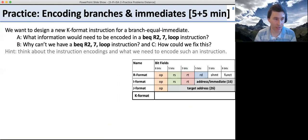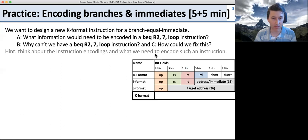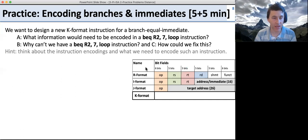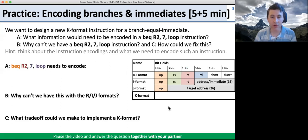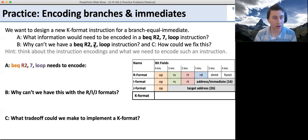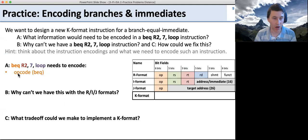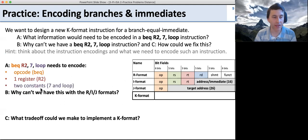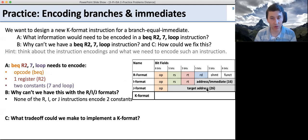Here's a practice on encoding branches and immediates. We want to design a new K-format instruction to do branch-equals-immediate, which allows comparing a register value to an immediate. What information needs to be encoded? It needs the op code, one register to compare against, and two constants — the immediate value and the branch address. None of our current formats have two constants, so we can't fit it in any existing format. Also, if we needed two 16-bit constants, we'd need 32 bits, leaving no room for the op code or register.